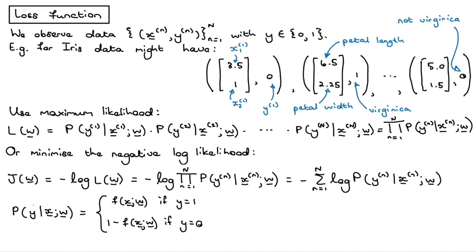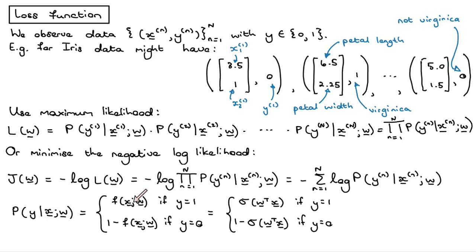From the previous slide, the probability of being in a particular class given the feature vector depends on whether the class is positive or negative. If we're looking at the positive class, it's just the output of our model — the prediction function. If we're in class 0, it's just 1 minus that. That's because we're doing binary classification. We can now substitute in the sigmoid function: the prediction model is the sigmoid of the dot product between the feature vector and the parameter vector w.